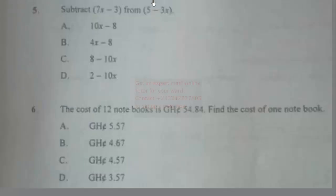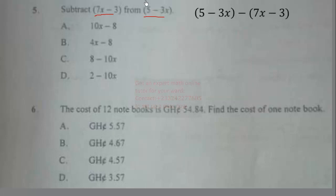Question 5: Subtract 7x − 3 from 5 − 3x. The expression that comes first is 5 − 3x, so we have: (5 − 3x) − (7x − 3).